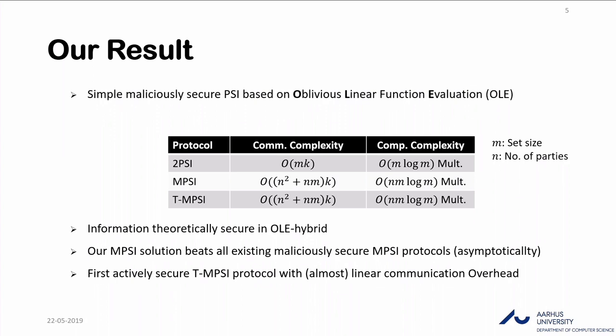We also give a protocol for threshold multi-party PSI with the same communication and computational complexity. Threshold multi-party PSI means every party will learn the intersection only when the size of the intersection is greater than some threshold value. All these protocols are information-theoretically secure in the OLE hybrid model. Our protocol asymptotically beats all existing maliciously secure PSI protocols, and this is the first instantiation of a threshold multi-party PSI protocol achieving active security with almost linear communication.